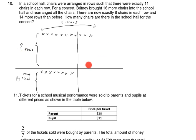At first, the arrangement was 11 chairs multiplied by an unknown number of rows. Then she decided to add 16 more chairs, and the new arrangement has 8 chairs per row.